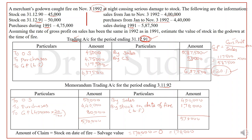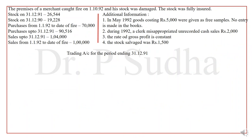One more problem under this method: the premises of a merchant caught fire on 1/10/92 and the stock was damaged. The stock was fully insured. Stock on 31-12-91, stock on 31-12-90, purchases from 1/1/92 to date of fire, purchases up to 31-12-91, sales up to 31-12-91, and sales from 1/1/92 to date of fire are given. Additional information: in May 1992, goods costing Rs. 5,000 were given as free samples — no entry was made in the books. During 1992, a clerk misappropriated unrecorded cash sales of Rs. 2,000. The rate of gross profit is constant. Stock salvaged: Rs. 1,500.